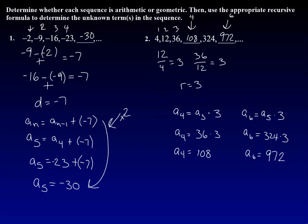Okay, so now that you've tried it. I said 12 divided by 4 is 3. I checked 36 divided by 12, it's also 3. So I know my common ratio is 3. And then I'm missing the fourth term and the sixth term.